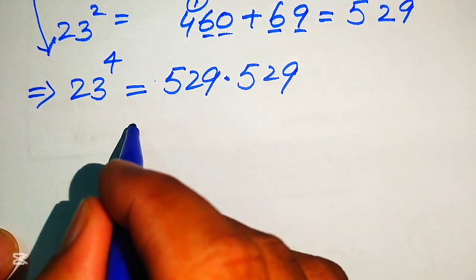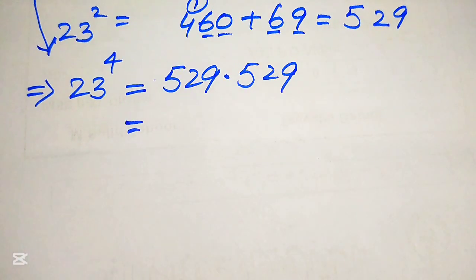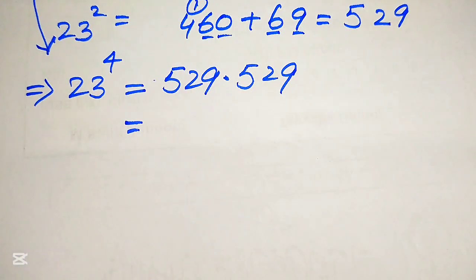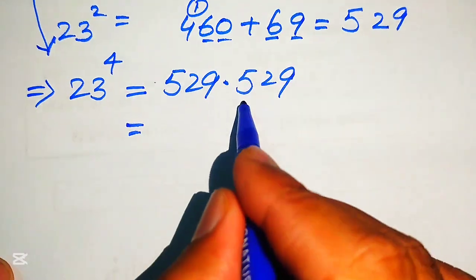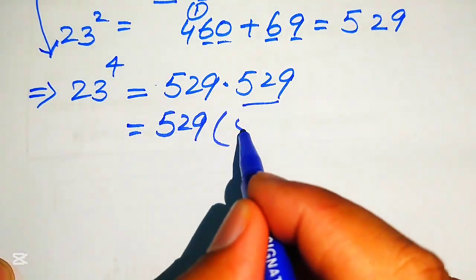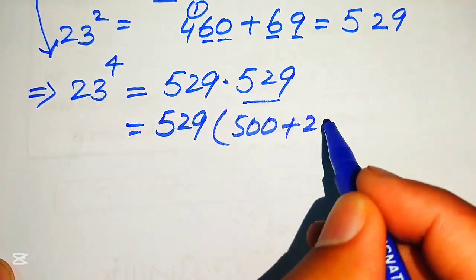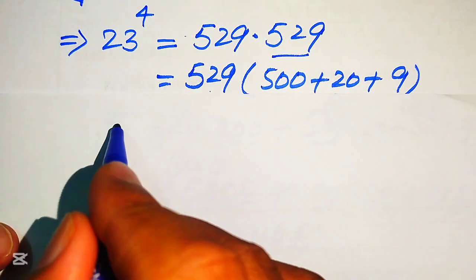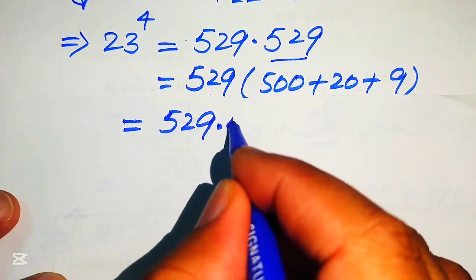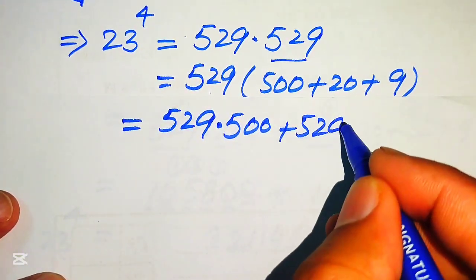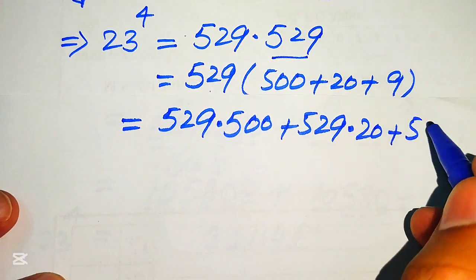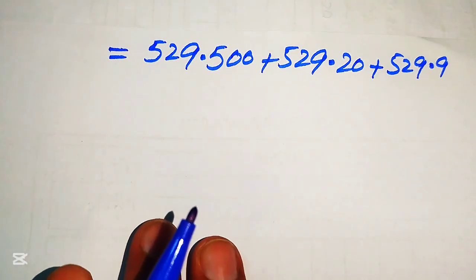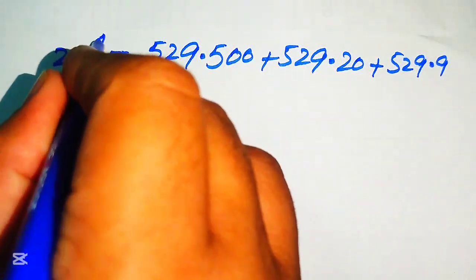Our next task is to find the product of these two larger numbers. We do this in a smart way without using a calculator. We break 529 as 500 plus 20 plus 9, and distribute: 529 multiplied by 500, plus 529 multiplied by 20, plus 529 multiplied by 9. On the left-hand side we have 23 to the power of 4.